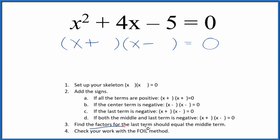Then we're going to find the factors for the last term, that's the negative 5 here, that add up to the middle term, the 4. So really, the factors for 5 are just 1 and 5. Since I want the middle term here to be positive, I'm going to put negative 1 and then 5 here.